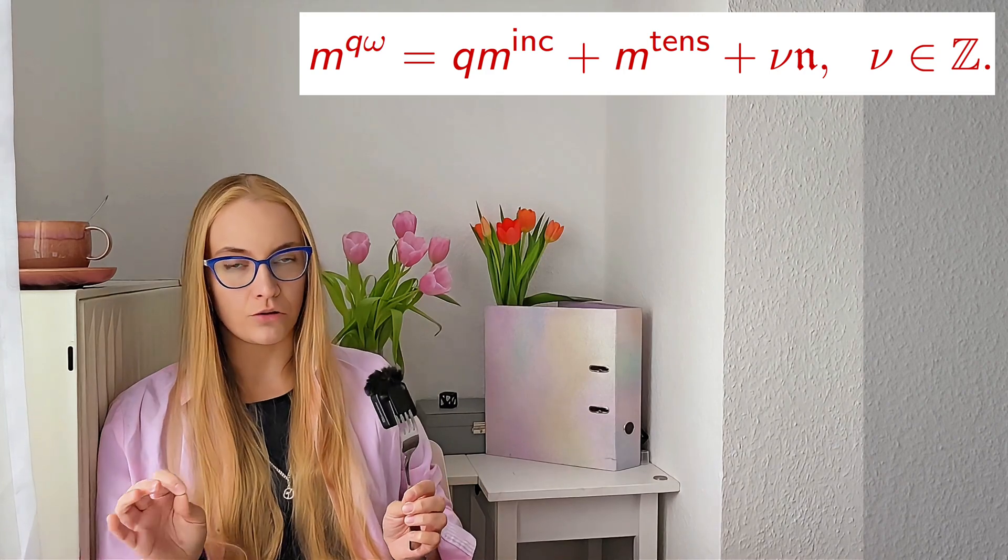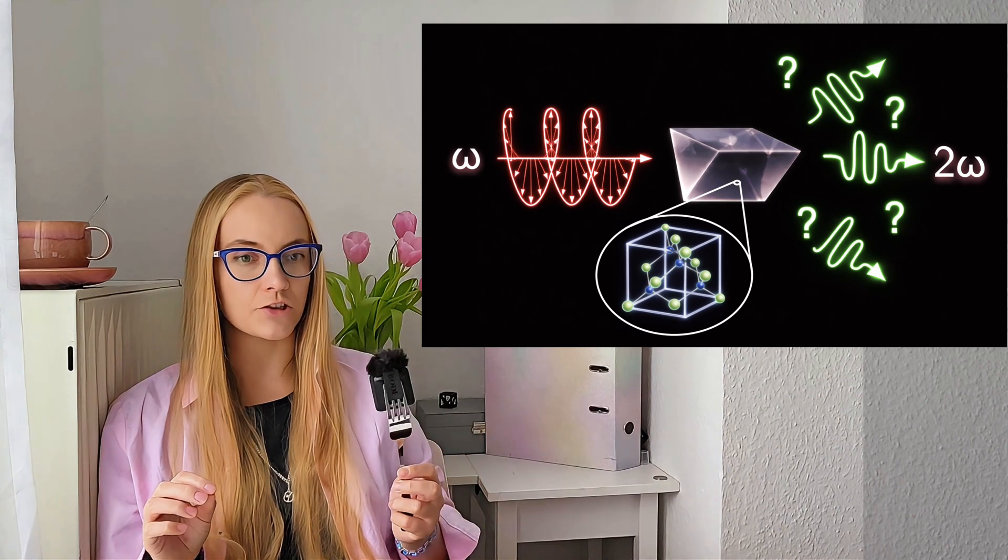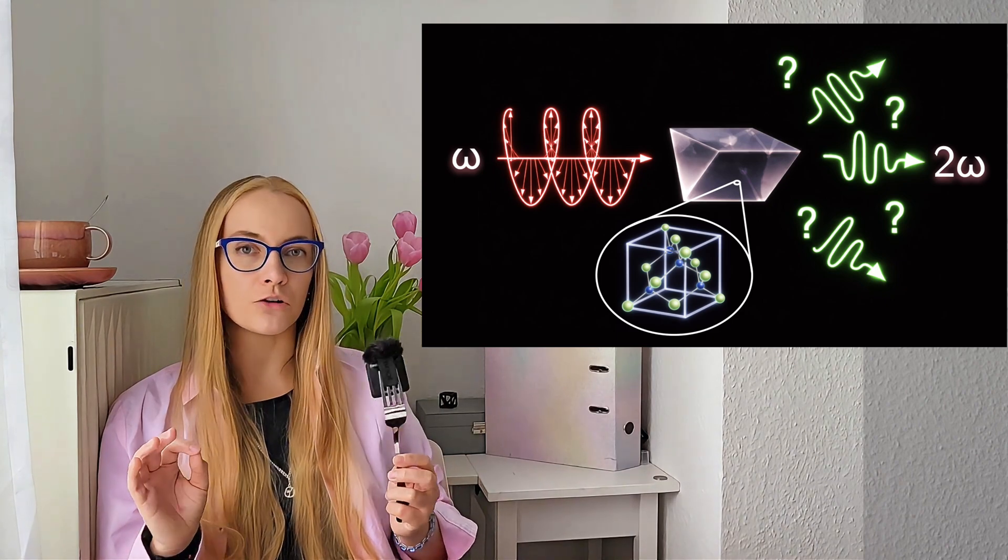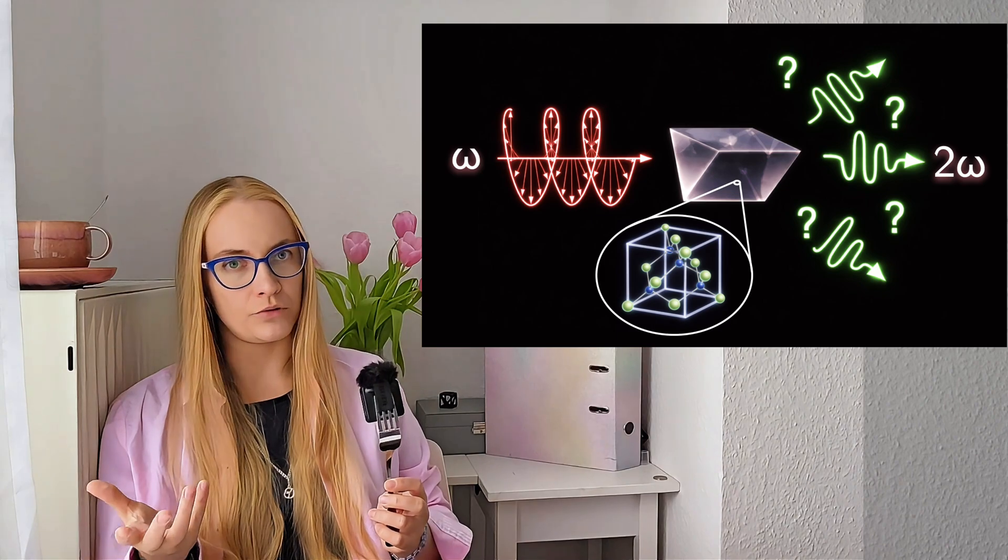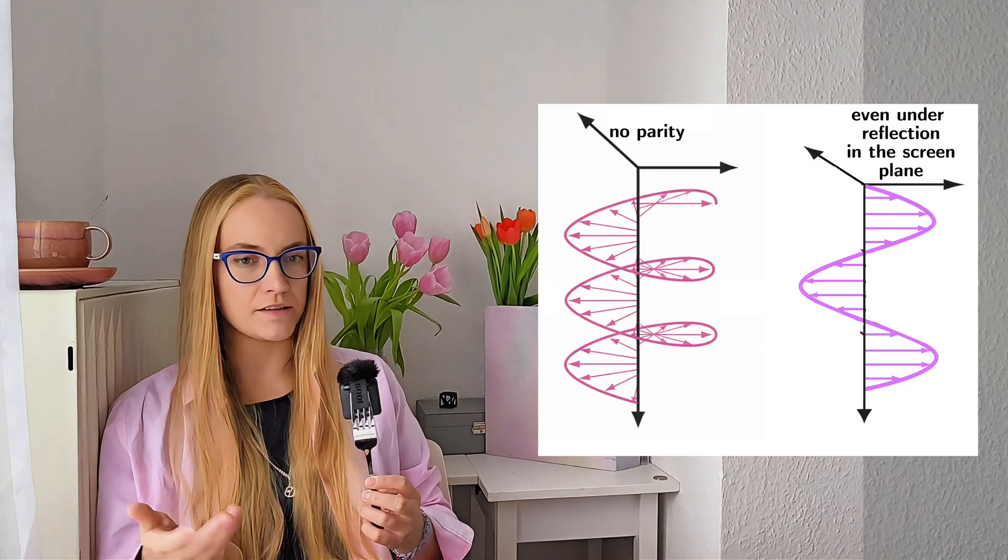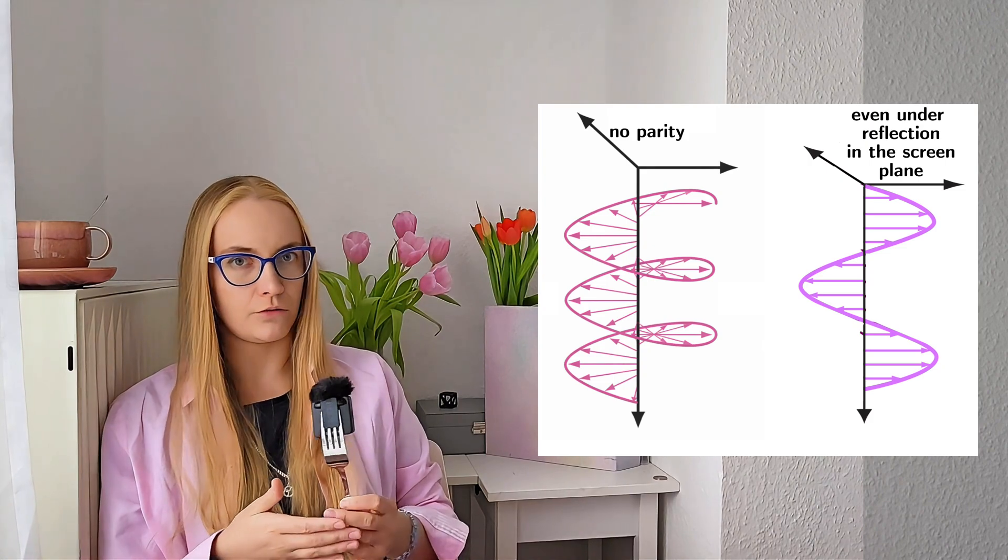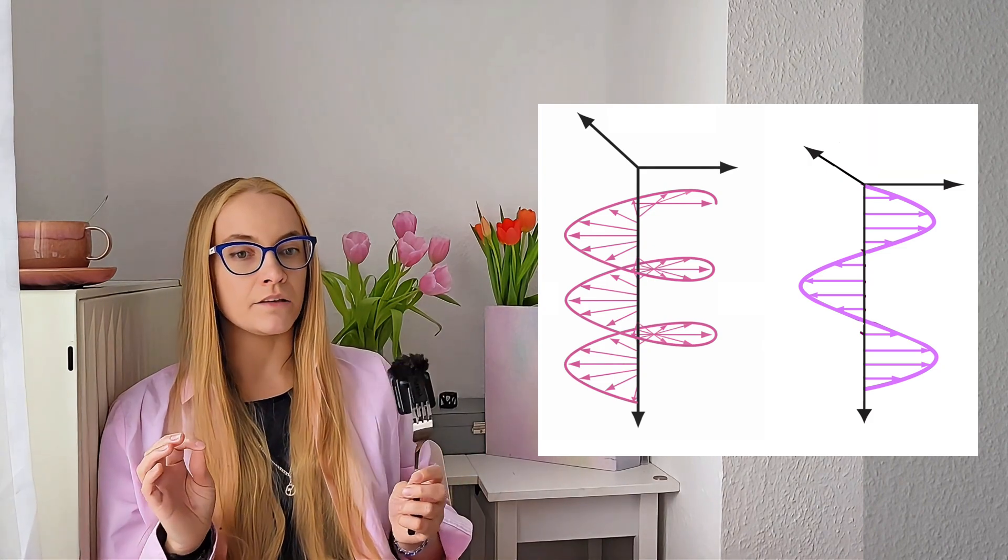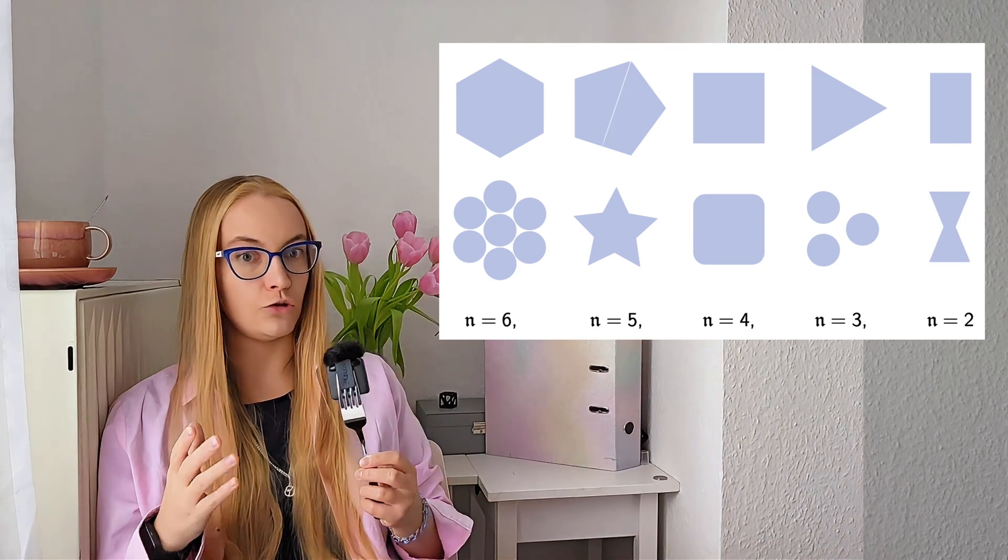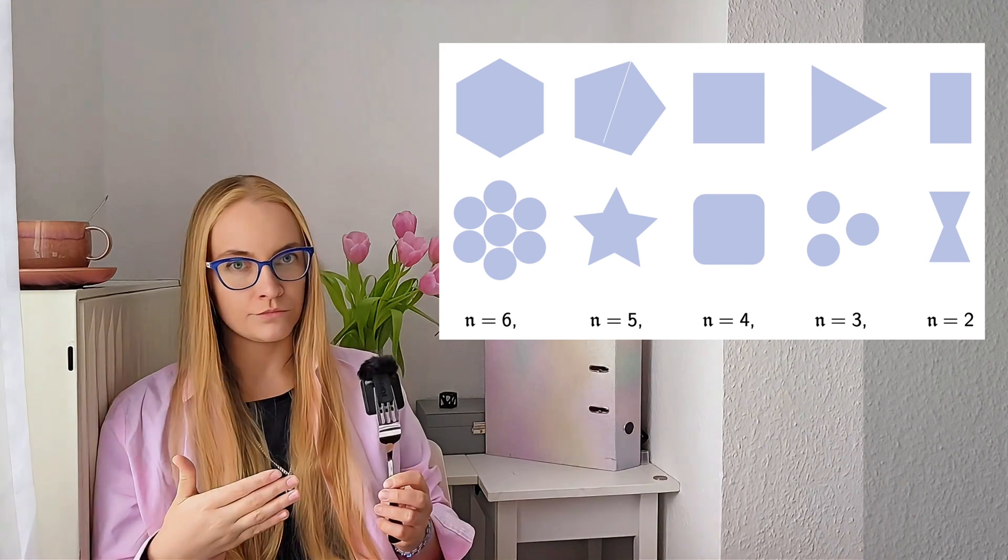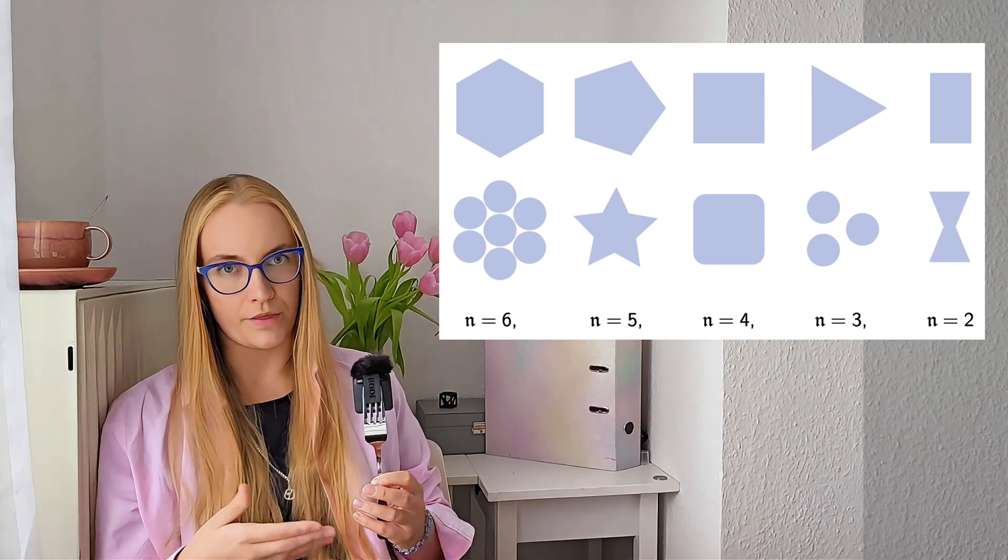So okay, now we have the rules for the total angular momentum projection. We only took into account the rotational behavior of all functions, but all three - the incident wave, the nanostructure, and the lattice - may also possess certain reflectional symmetry. It's easy to determine the reflection parity of the incident wave: it can be odd, even, or just not possess any parity at all. And we are only interested in nanostructures which do have this reflectional plane. If the nanostructure doesn't have any reflection symmetry, we don't have this selection rule.